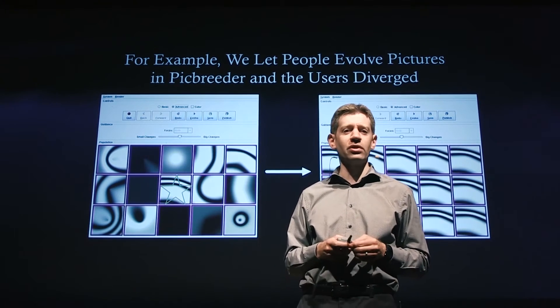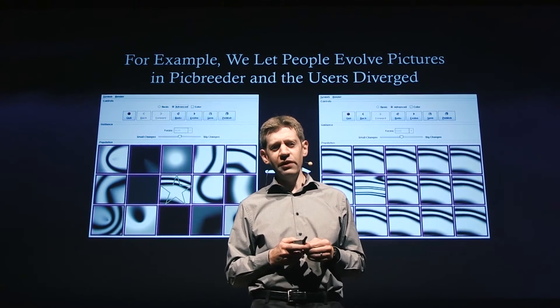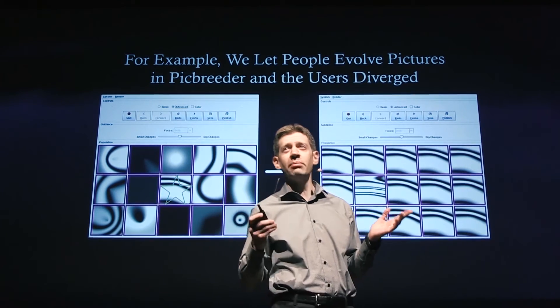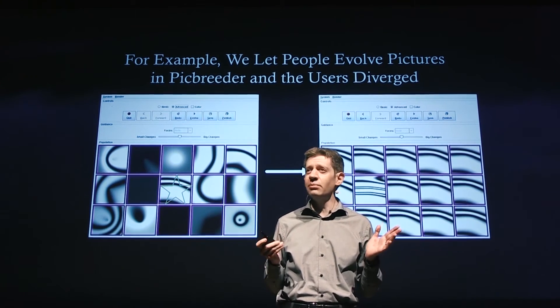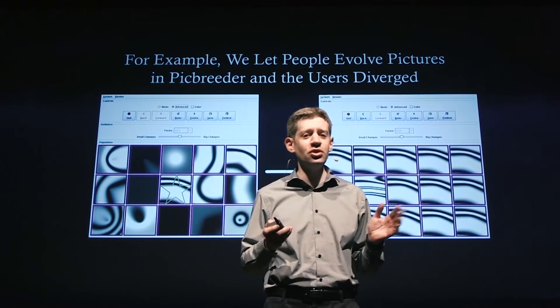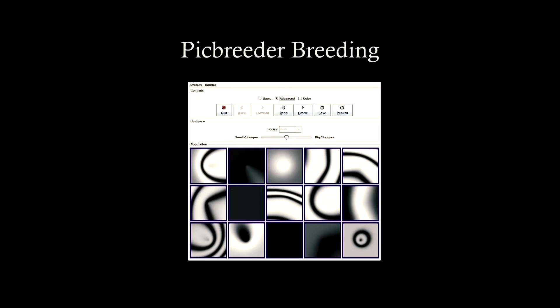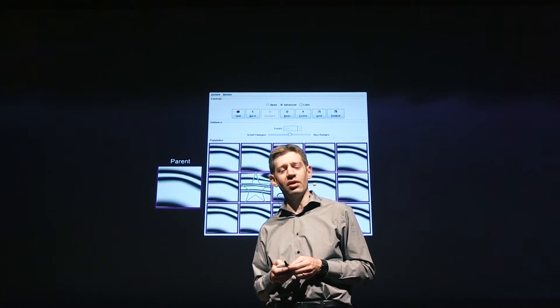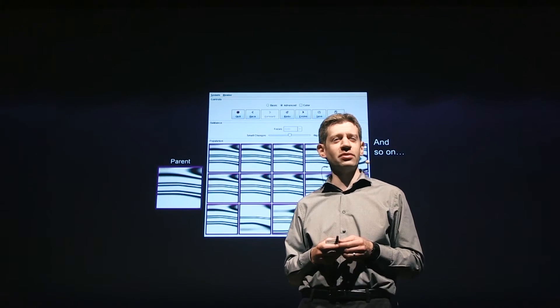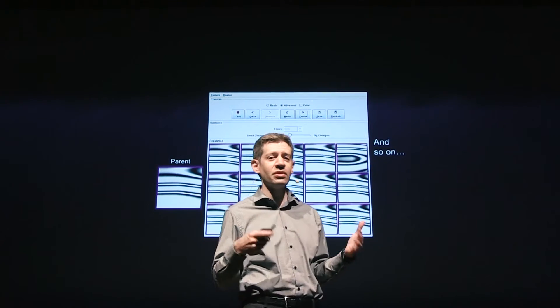In the left panel you see a bunch of images — there are 15 images, they're just blobs. What you can do in the system is choose a blob that you like. The user chooses one, and that becomes the parent of 15 children. Then you can choose another blob you like, and it can have its own children. Basically, humans are interactively breeding.